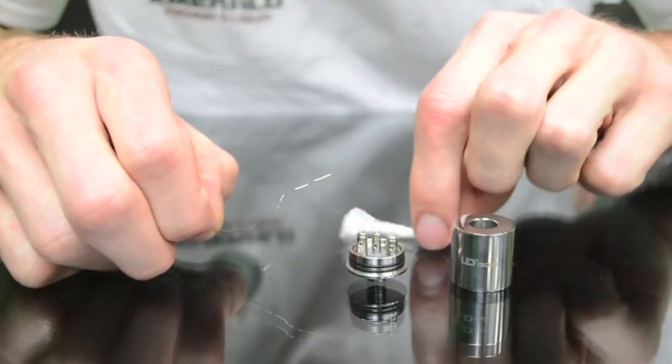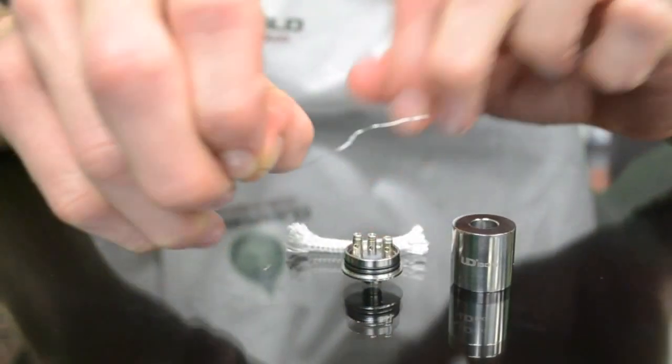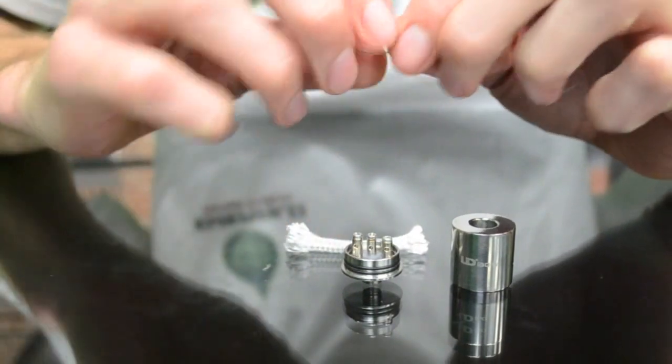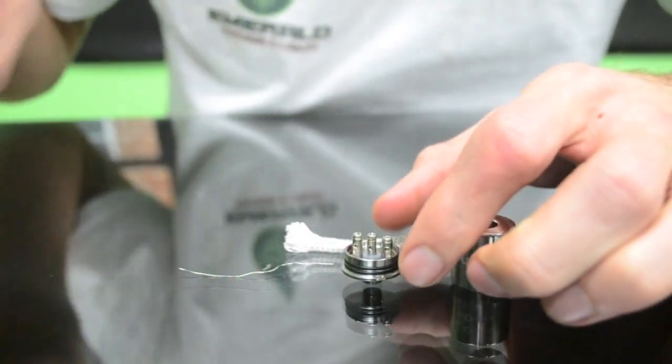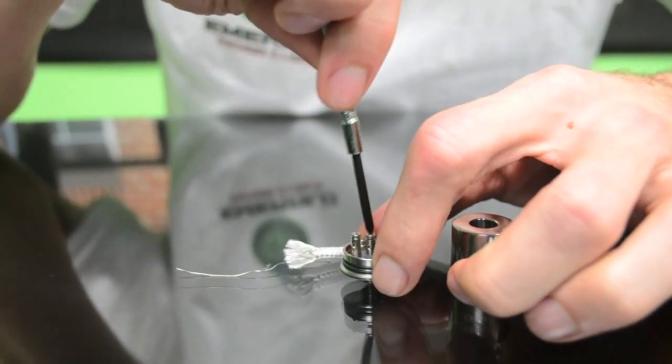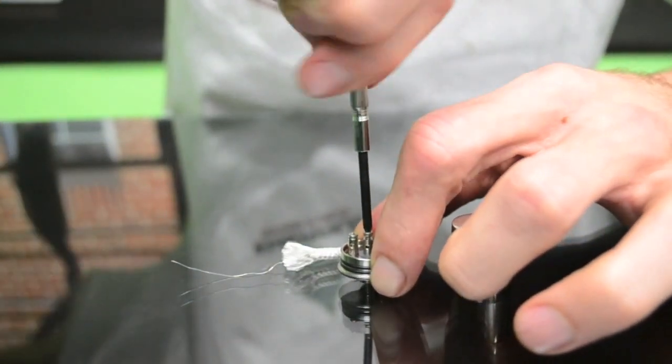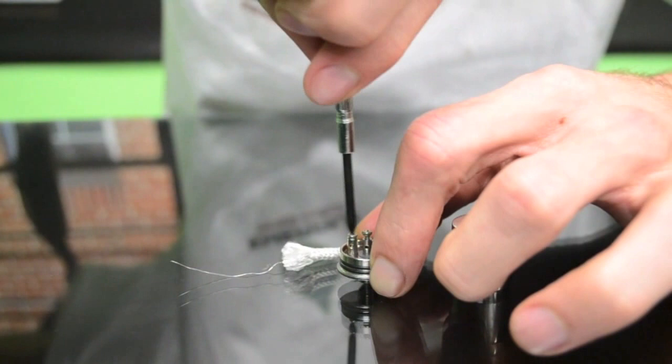What you're going to want is a piece of silica wick, some resistance wire, and then your dripping atomizer. What you're going to do for starters is loosen up the positive post and the negative post.